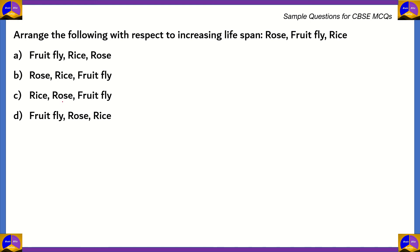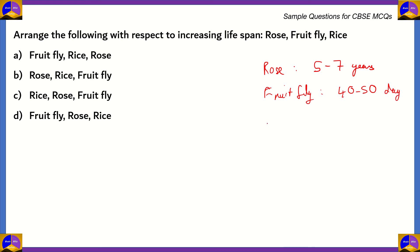In the chapter Reproduction in Organisms, the first thing we study about is lifespan, life expectancy, and so on. There are some examples given in the textbook. It says that a rose lasts for 5 to 7 years, a fruit fly lasts for 40 to 50 days, and rice lasts for 3 to 4 months. Remember, we're talking about the rice plant here, not the seed.